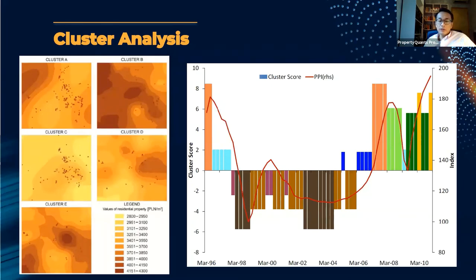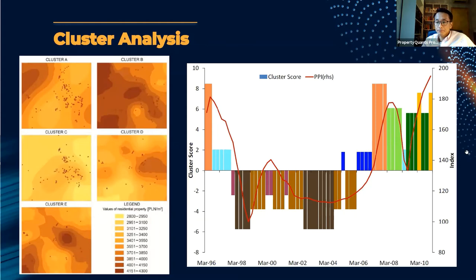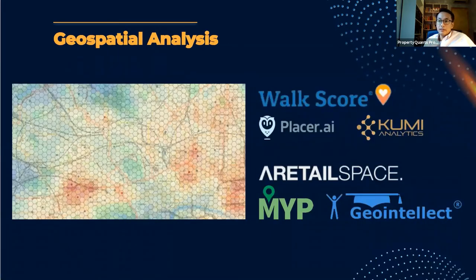Another interesting use case is to cluster macroeconomic conditions across time. The chart on the right is from an academic paper scoring macroeconomic conditions at different time periods, leading to a more statistically robust way of producing a property market cycle analysis. The bars are the cluster scores — how positive macroeconomic conditions are at a particular time — and the line in red is the property price index. This helps analyze where we are in the cycle: topping out at 12 o'clock, bottoming at 6 o'clock, and so on.